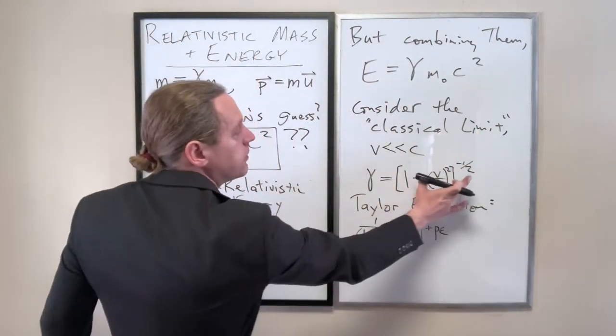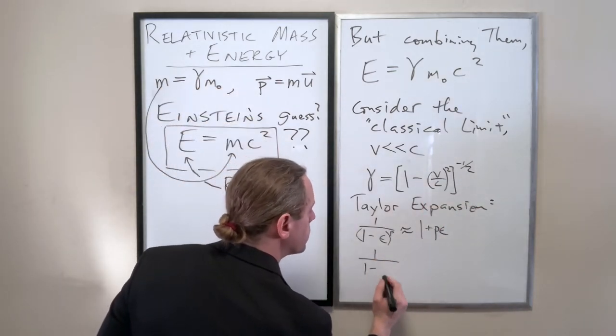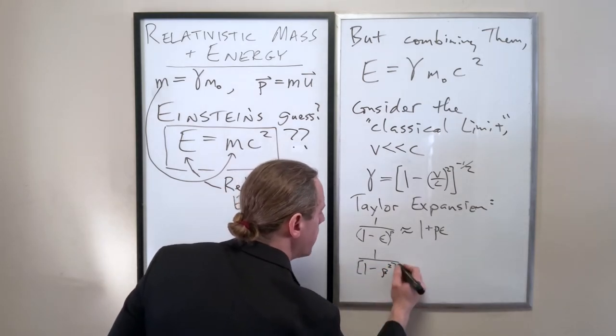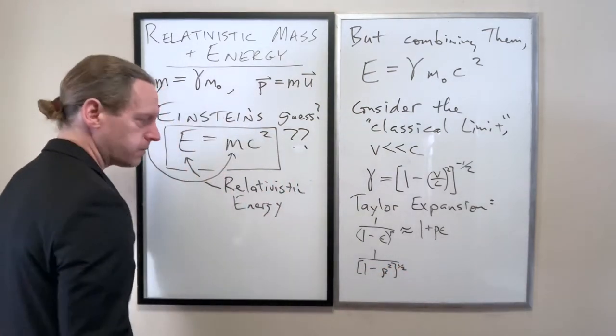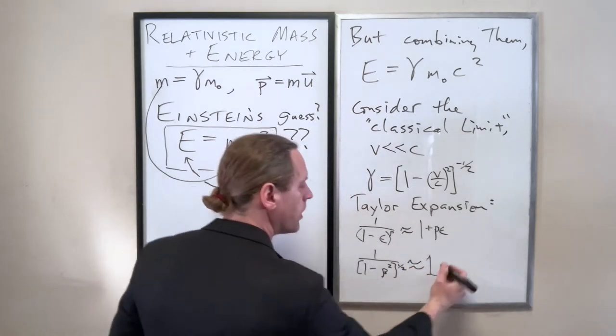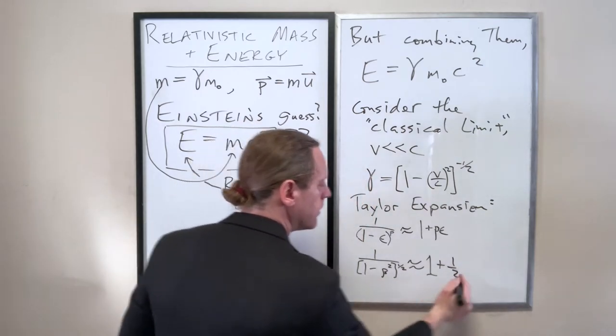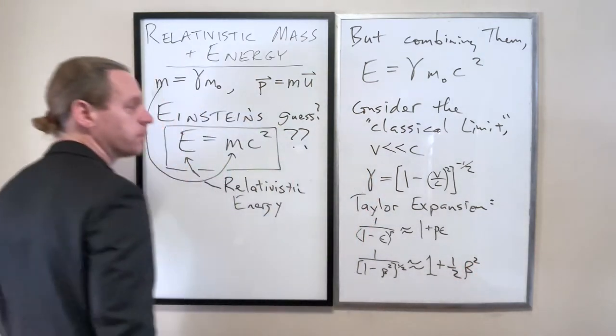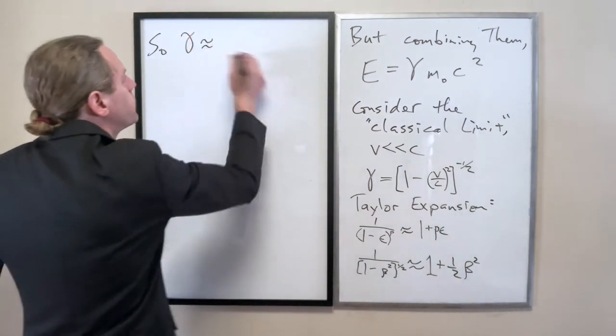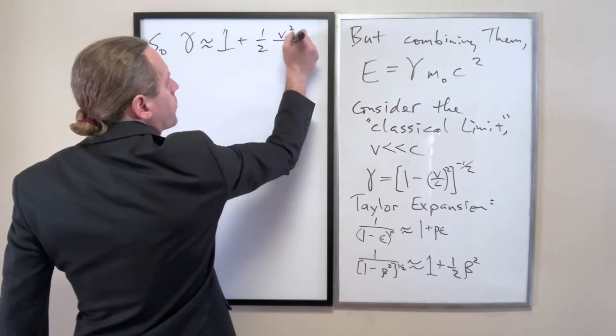So this now just becomes 1 minus P epsilon. And when you take that same limit, that becomes 1 plus P epsilon there. I hope that makes sense. So we're just replacing the little guy with PE instead. So if we Taylor expand this.